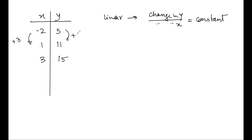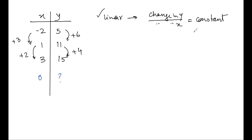Looking at our example data: the changes in x are 3 and 2, and the changes in y are 6 and 4. The ratio 6 over 3 is 2, and 4 over 2 is also 2 — constant. So this is a linear function. We can use this ratio to find other values: for x equal to 0, the change from x=1 down by 1 would be -2 in y, but since the change in x is 3 less going to x=−2, the y change is −6, giving y equal to 9 without needing the full equation.